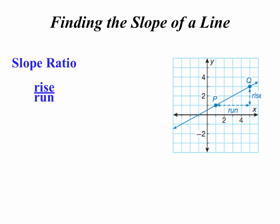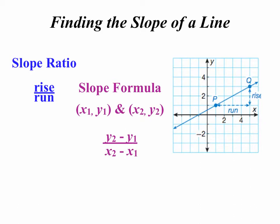So I find slope on a graph by locating two points that lie on the line, any two points, and I measure the rise over the run. If I have the coordinates of two points, I find the slope by doing the difference of the y's over the difference of the x's.